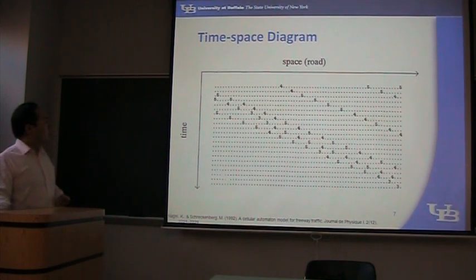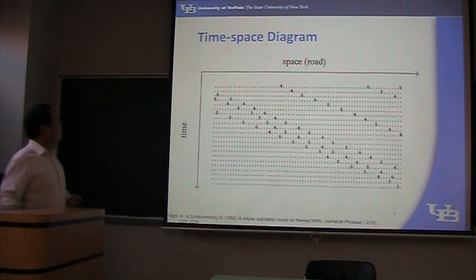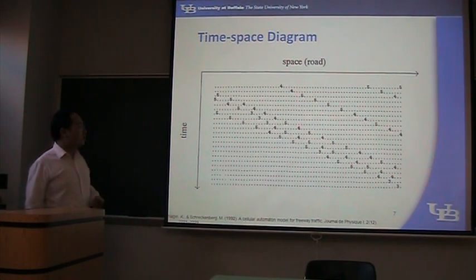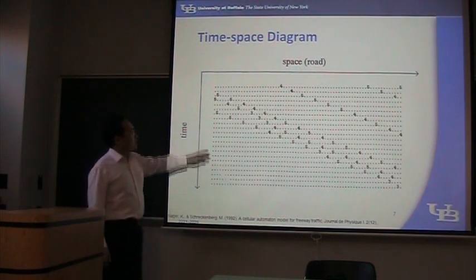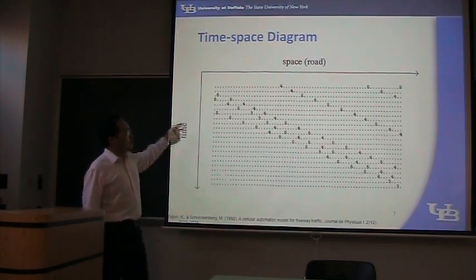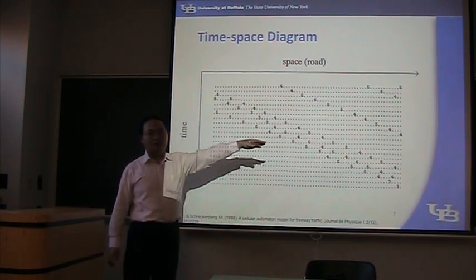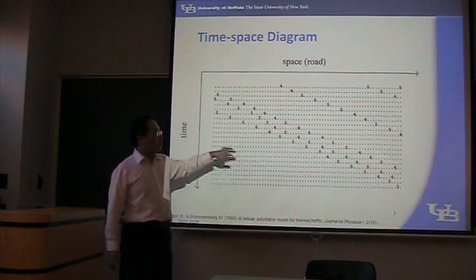Now let's take a look at the cellular automata time-space diagram. This is the time axis and this is the space axis, and vehicles are traveling that way.